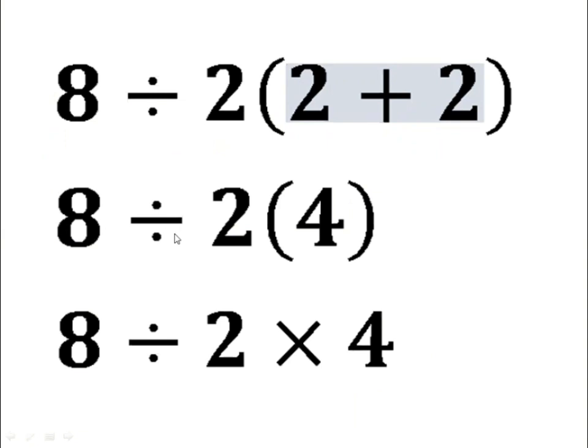Now we have 8 divided by 2 brackets 4. We can interpret the brackets as an implicit multiplication, and so the expression becomes 8 divided by 2 multiplied by 4.